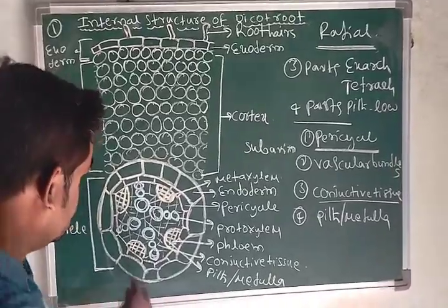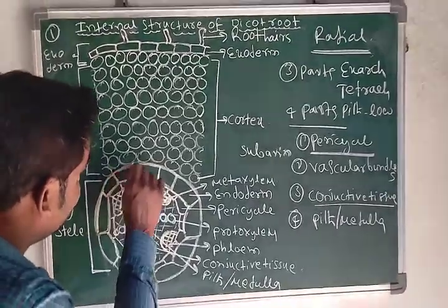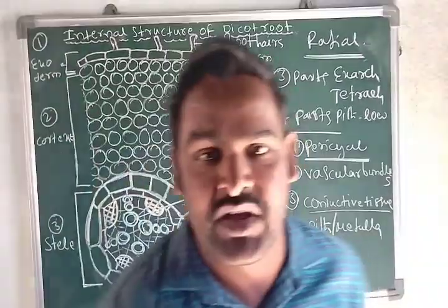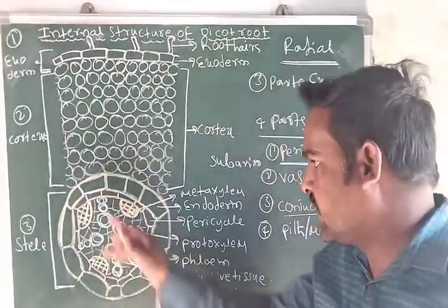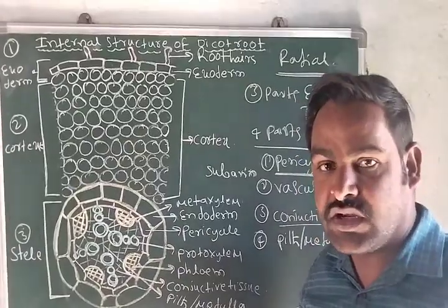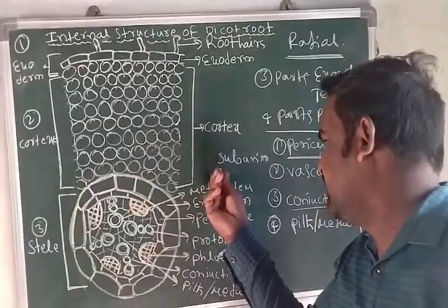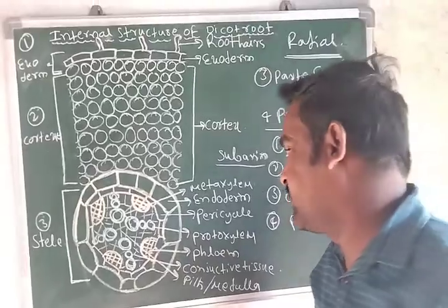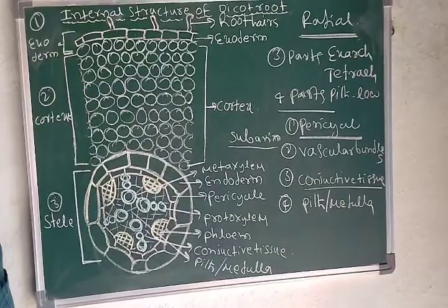The tangential and radial cell walls of the endodermal cells mainly have Casparian strips. The Casparian strips mainly contain a water-impermeable wax material called suberin.